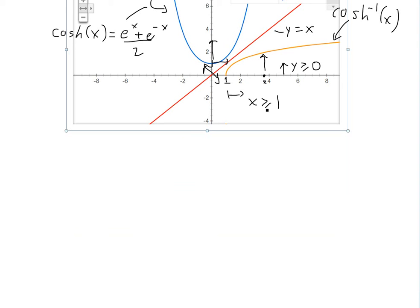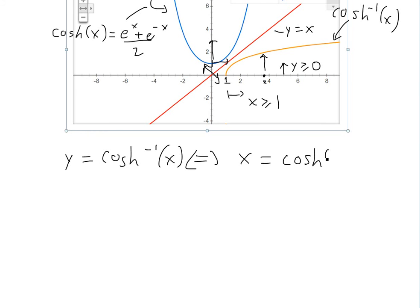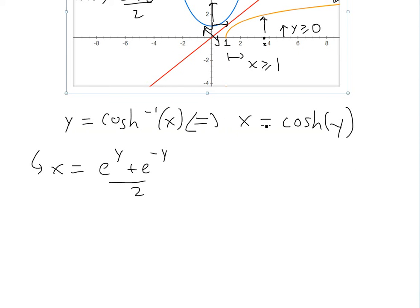Now that we've gone over the domain and range — which we'll use in the proof — let's write y equals inverse hyperbolic cosine of x. This is the same as writing x equals hyperbolic cosine of y, by the definition of an inverse function: we just swap x and y. We can also write this as x equals (e^y plus e^(-y)) divided by 2.